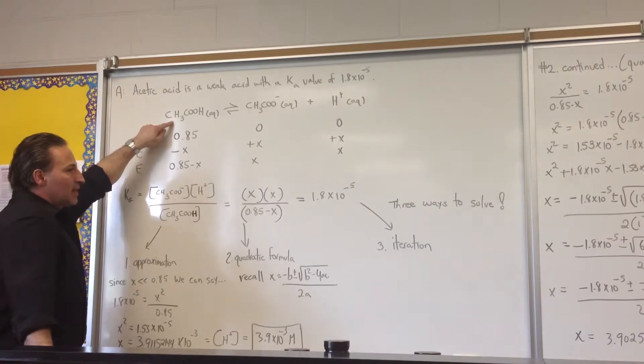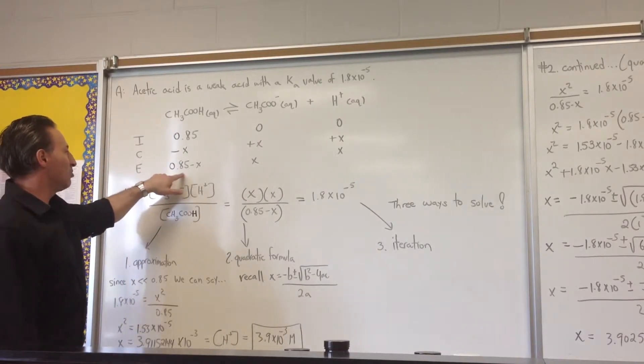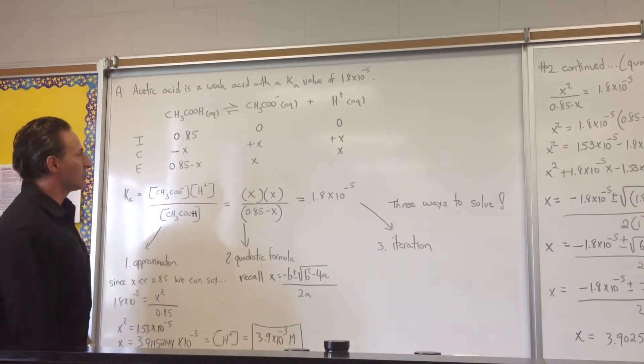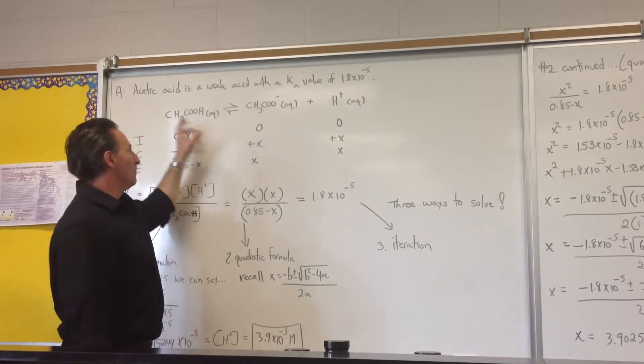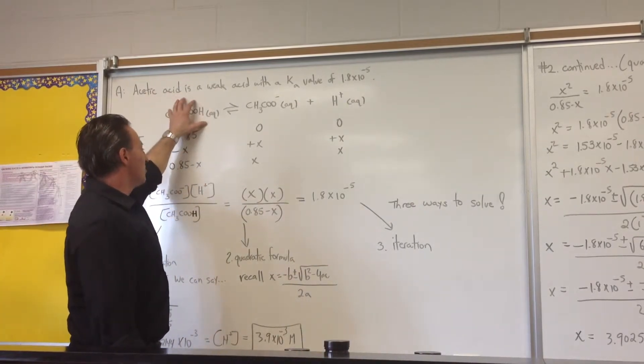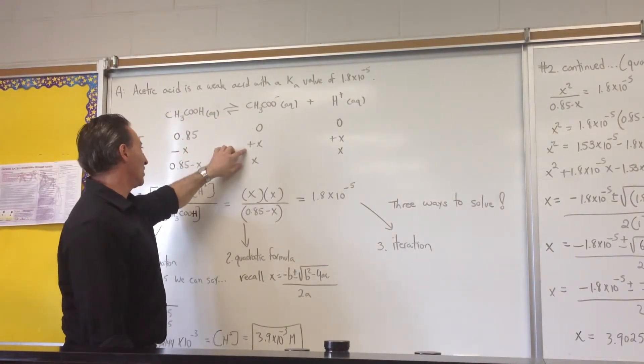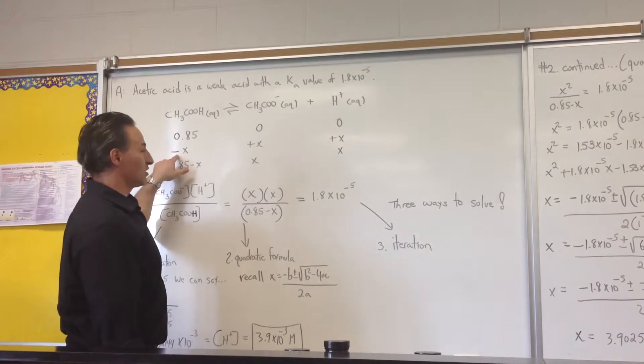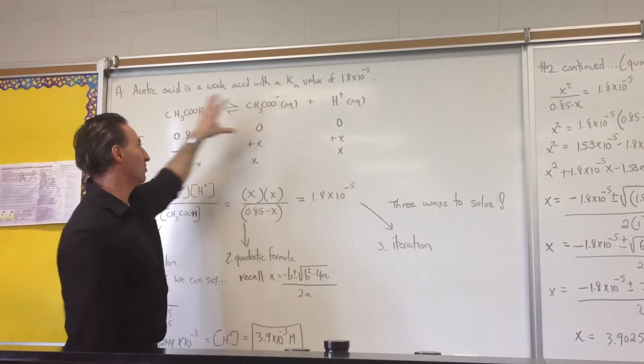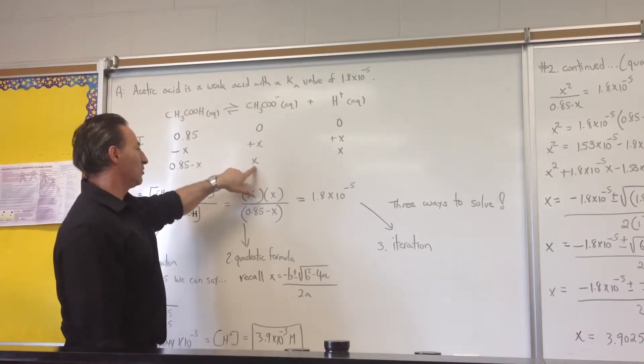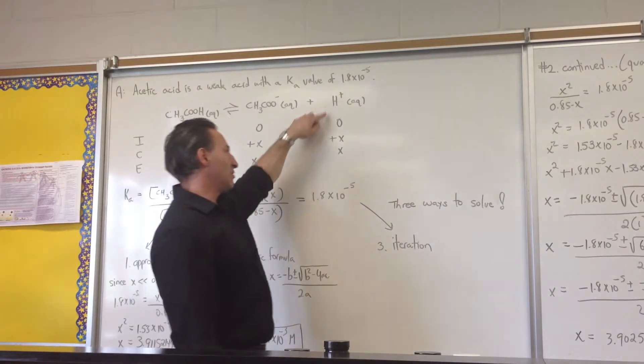Once the acid begins to dissociate, an amount X of the acetic acid will break down. So at equilibrium, we're going to have 0.85 minus X concentration. In the same proportion that this breaks down, we'll produce acetate anion. If it starts at zero, it will be plus X. The equilibrium concentration will be X, same with the protons.